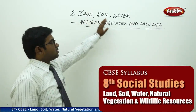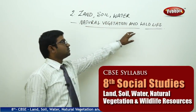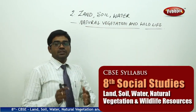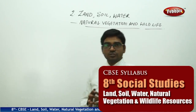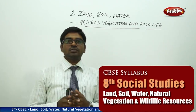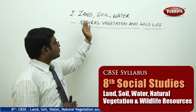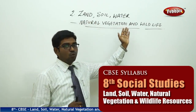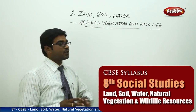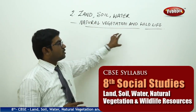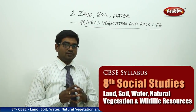Chapter 2: Land, Soil, Water, Natural Vegetation and Wildlife. In this chapter, we will be discussing the different natural resources — what we got naturally from nature. Land, Soil, and Water — these three play a very vital role when it comes to natural vegetation and also the growth of wildlife.